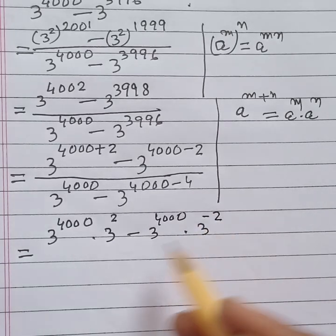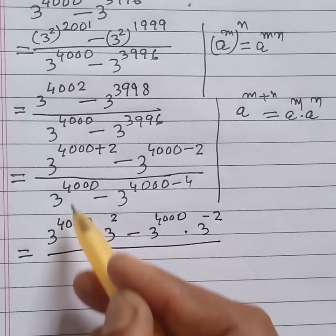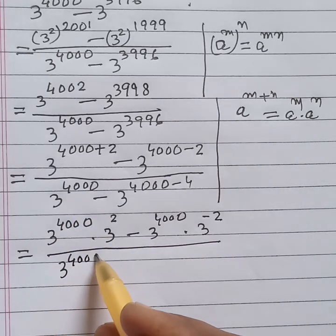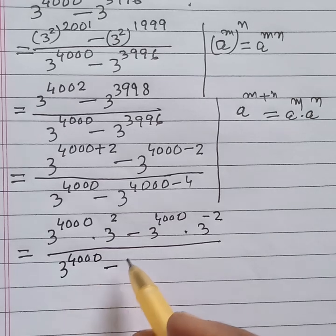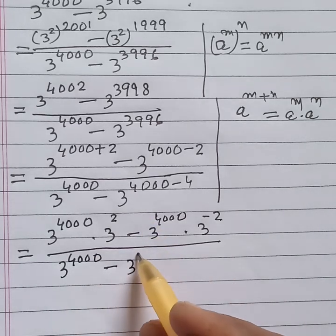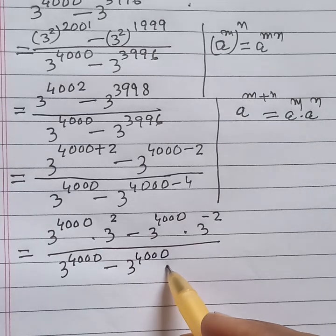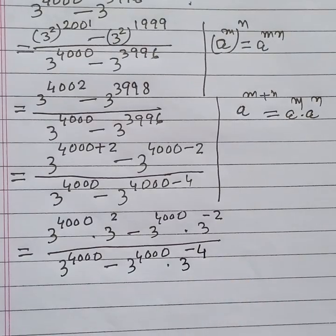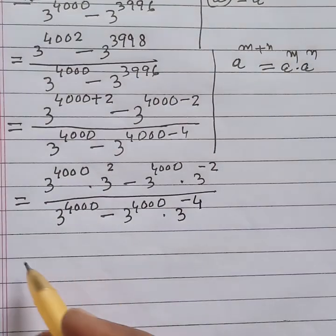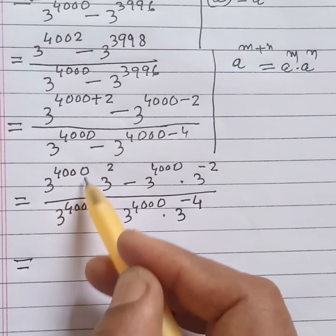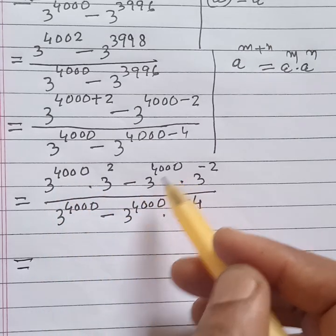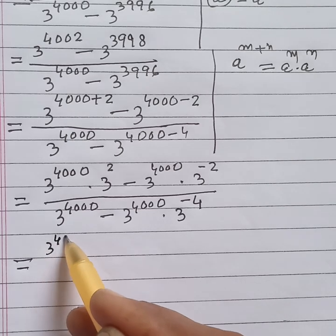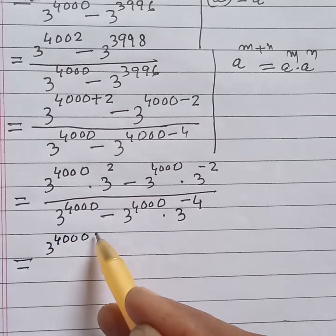So the denominator becomes: 3 to the power 4000 minus 3 to the power 4000 multiplied by 3 to the power minus 4. Next, we take 3 to the power 4000 as a common factor.